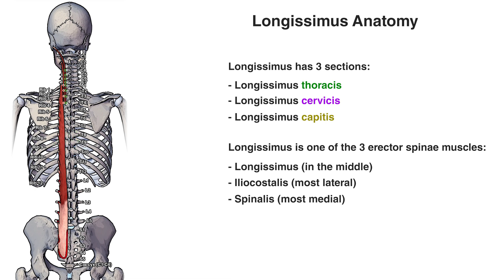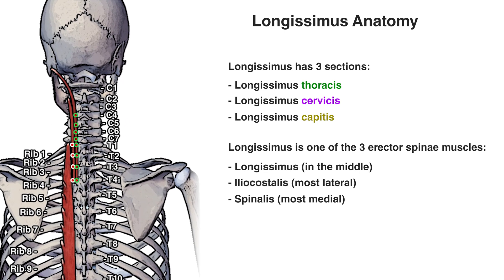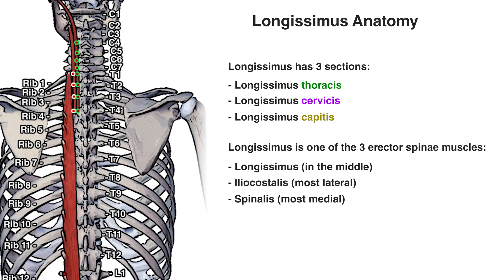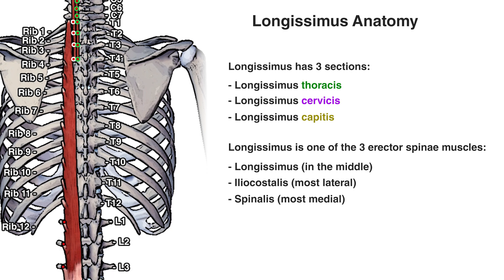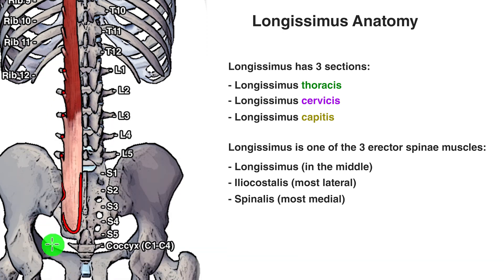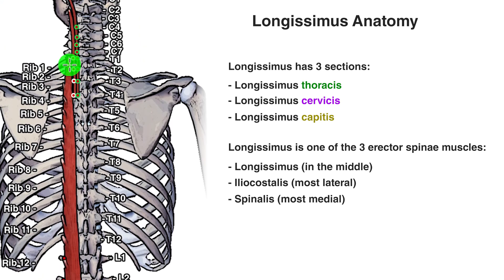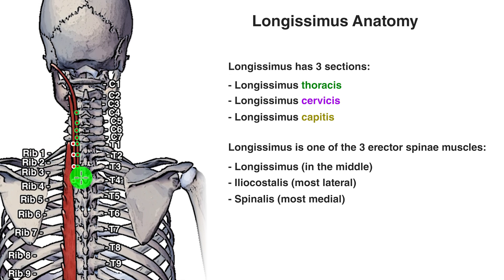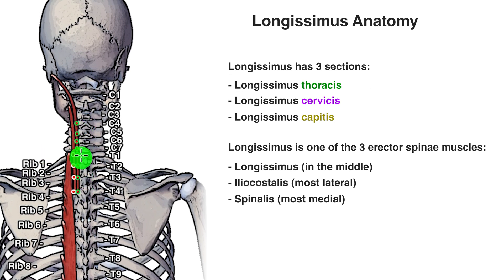You can see the different origin points now marked in red, with the muscle left in place so you can see where the different sections are originating from. The longissimus thoracis section has a black outline, the longissimus cervicis section has a white outline, and the longissimus capitis section has a green outline.